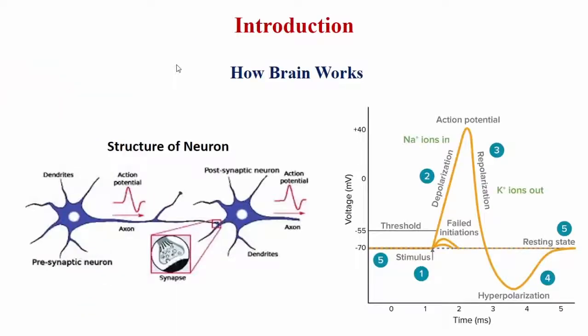Before I explain about the research work, I will briefly explain how the brain works. This shows the structure of a neuron. Whenever the intention of a subject comes outside, it is because of neuron activation — that is what we call neuron firing. It will happen when a threshold value is reached, which is around 70 millivolts.